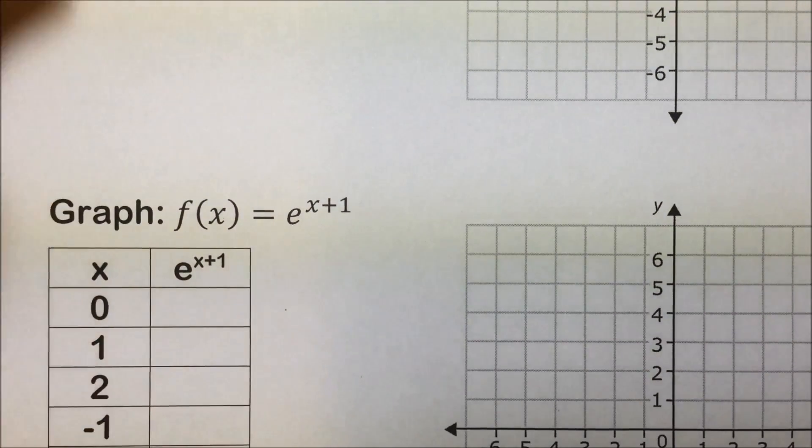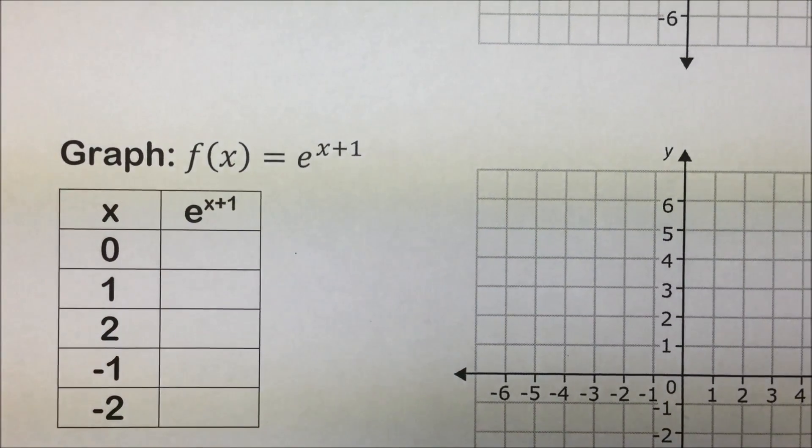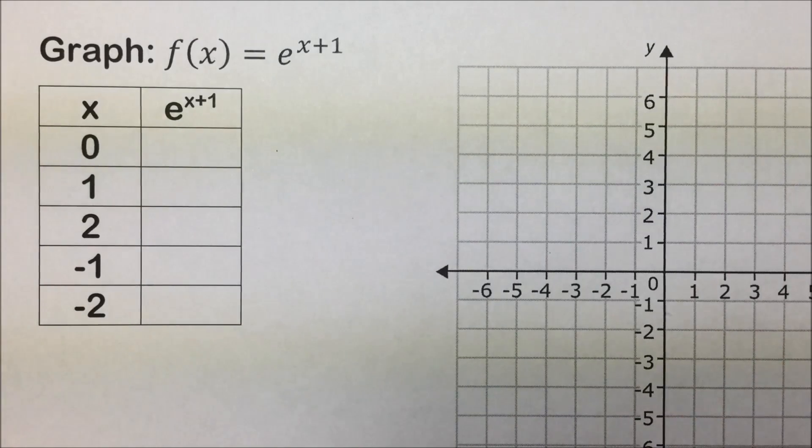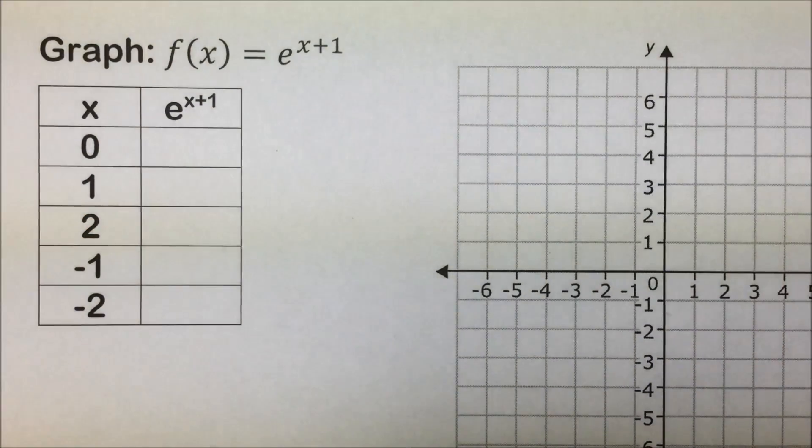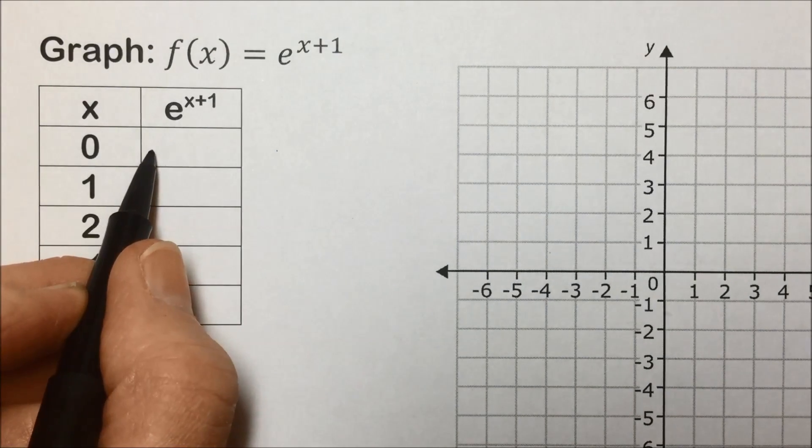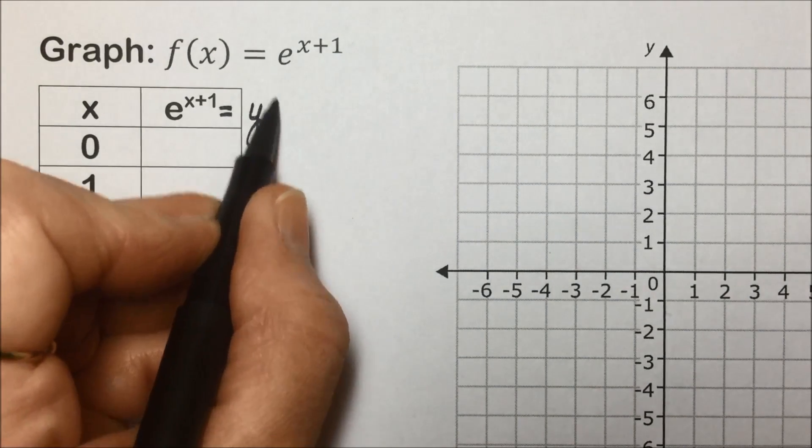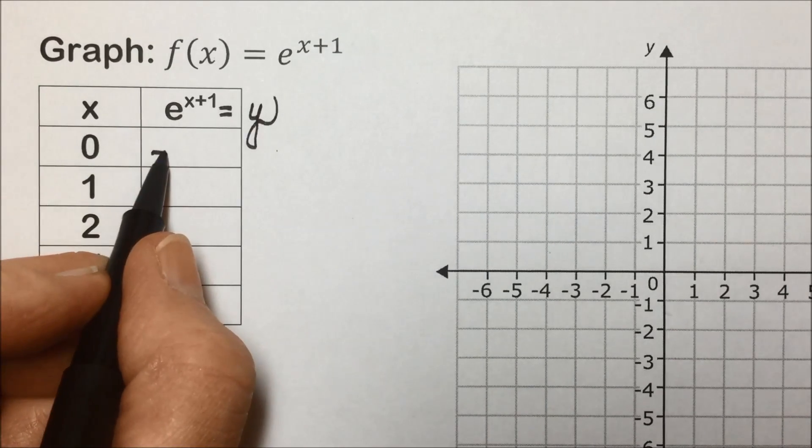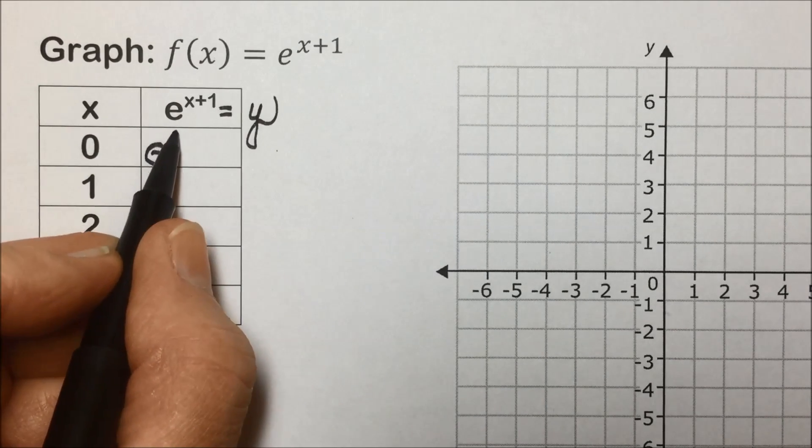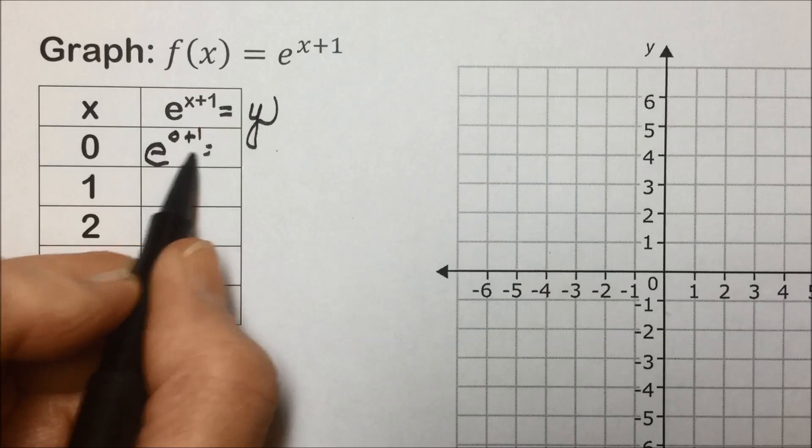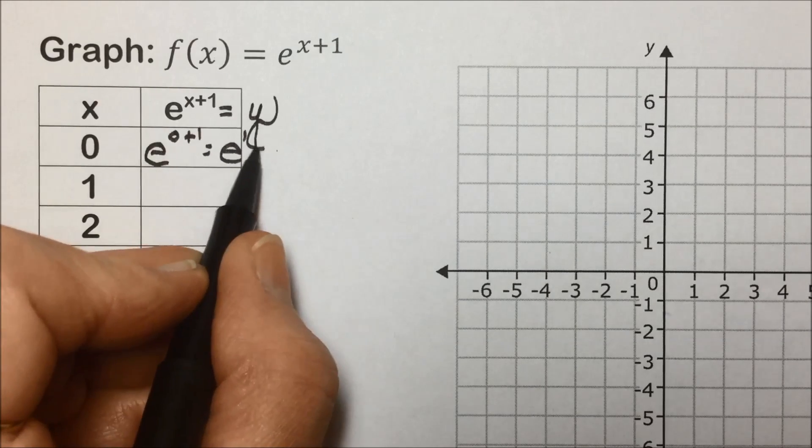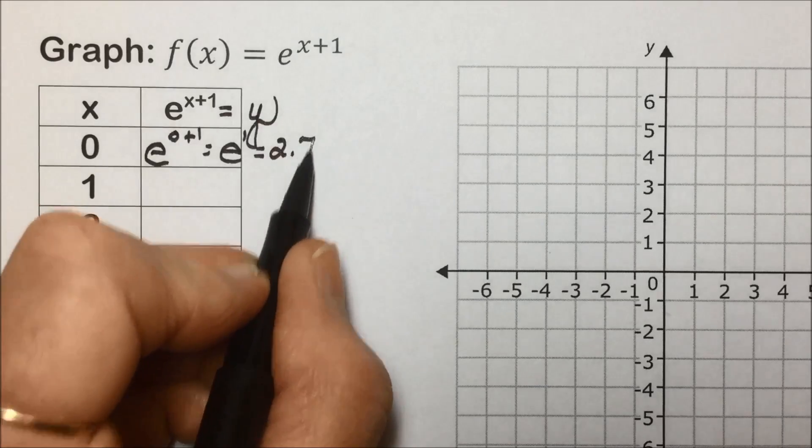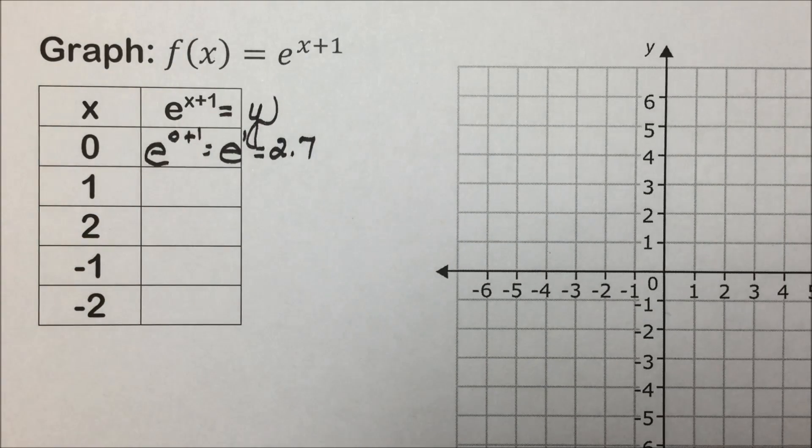Looking at a variation of that exponential function, in this example they're asking us to graph the function where e is raised to the x plus 1. And let's see what happens. Again, this second column is generating our y values, so we'll have a 0 in place of x, which leaves us with e to the 0 plus 1 or e to the first power, and that would be approximately 2.7.